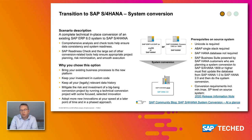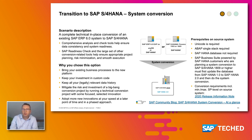Technical requirements for system conversion: the source system should be an SAP ERP 6.0 system on any enhancement package, Unicode, ABAP single stack. The SAP HANA database is not required — the system can run on any database — but if already running on SAP HANA, it must be HANA database version 2 at minimum. Older HANA versions require a database upgrade first. Full requirements are described in the 2020 release information note linked on the slide, and a community blog provides more detail on how the technical conversion works.